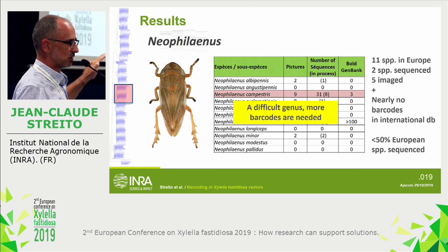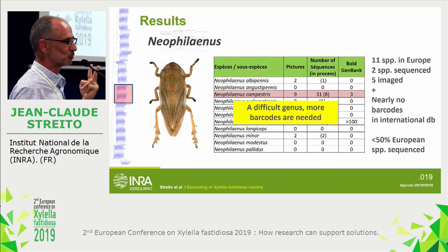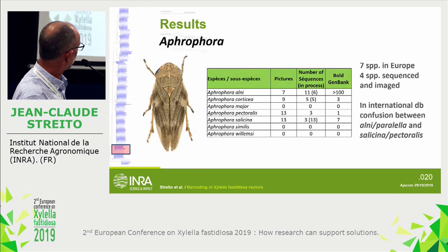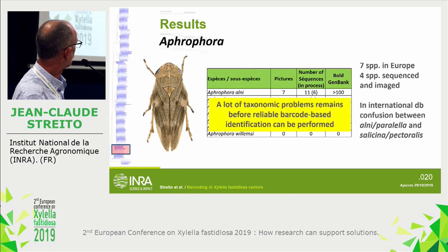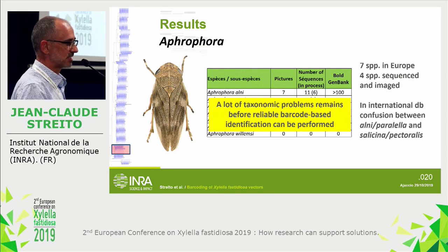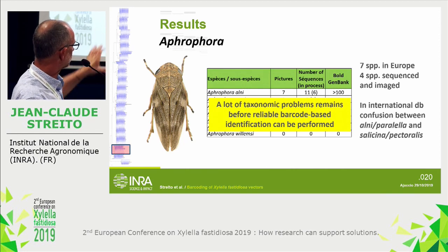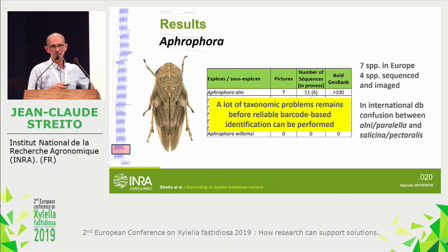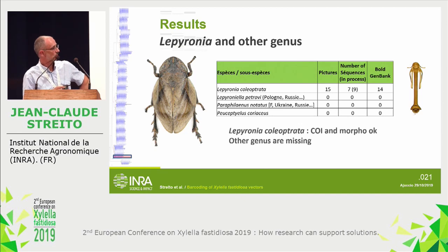Neophilaenus is a difficult genus both morphologically and molecularly. We only have two species sequenced to date and need more specimens and more barcodes. The same is true for Aphrophora, where we have seven species in Europe, many taxonomic problems, and it's not easy to identify them even with the edeagus. Sequences in the international database are full of misidentification and are very difficult to work with.